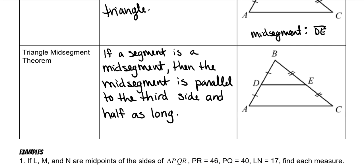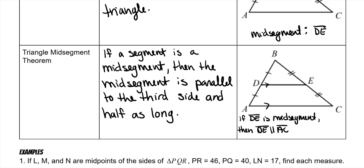So DE is a mid-segment, and that tells us two different things. DE is parallel to AC — this one is parallel to that one. And it also tells us that DE, the length of it, is equal to half the length of AC.